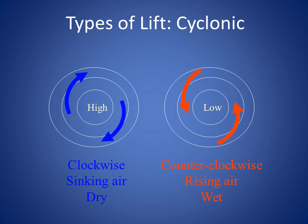Here are the circulations around a high and low pressure system. A high pressure system has clockwise circulation around it, with sinking air due to upper level convergence and surface divergence — typically dry conditions are found here. Cyclonic lift occurs in a low pressure system, which has counter-clockwise circulation around it with air coming towards the center of the low. You will find rising air due to upper level divergence and surface convergence — typically wet conditions are found here.